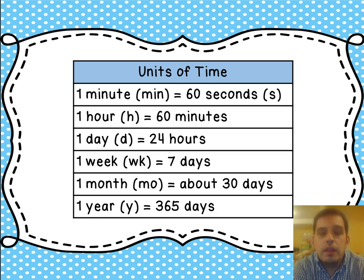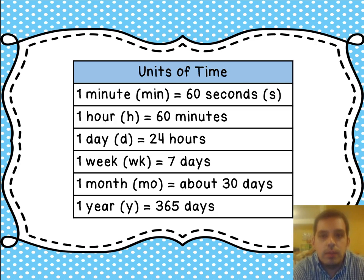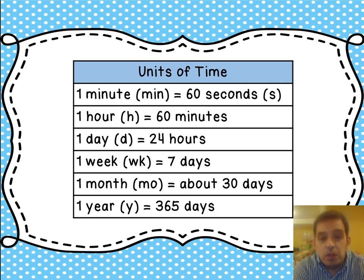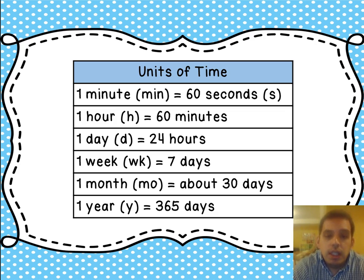We got a chart. This chart tells us everything we need to know about units of time. You can see here: 1 minute equals 60 seconds, 1 hour equals 60 minutes, 1 day equals 24 hours, 1 week equals 7 days, 1 month is about 30 days — there are some months that have 31 days, but for the most part we can say a month has about 30 days — and 1 year has 365 days in it.